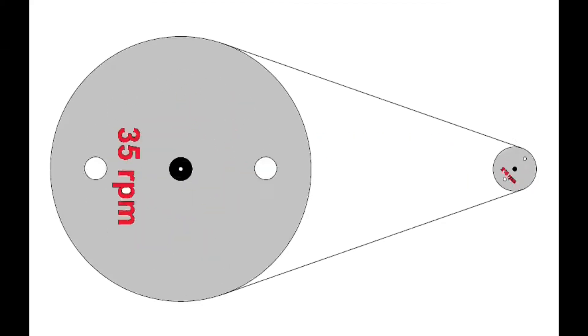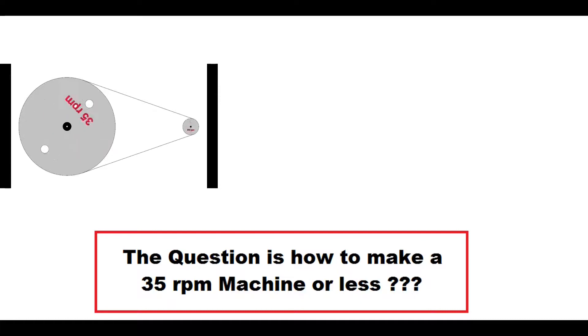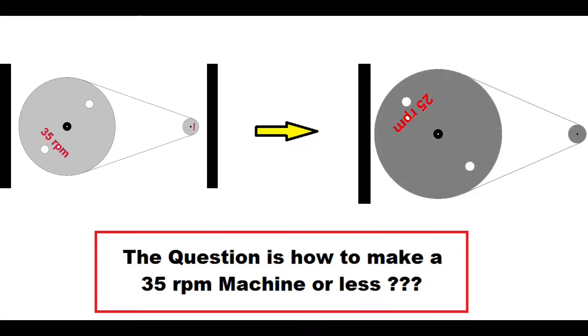The next question is how to make a 35 RPM machine or less. So the answer is we need to make the diameter of the sheave pulley larger so that we can achieve a slower angular velocity or RPM.